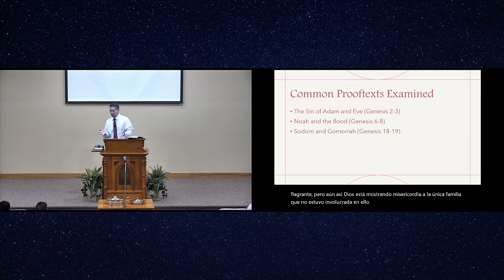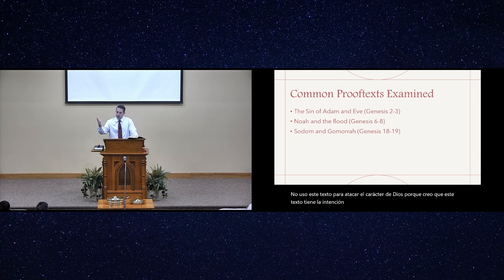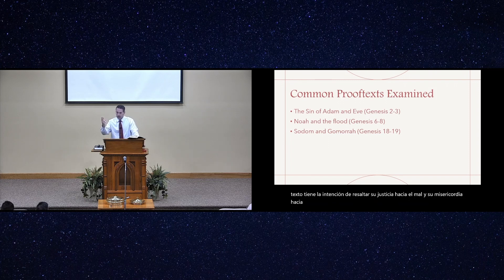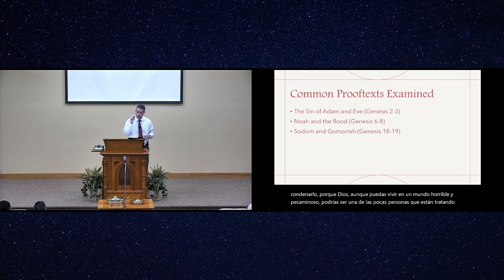Genesis 19:29 says that God remembered Abraham. Sodom and Gomorrah is an example of God answering Abraham's prayer and his request on behalf of the righteous. This city is called exceedingly wicked in Genesis 18:20, where there were even homosexual rapists who sought to attack city guests. This is the ancient example of homosexual sex trafficking. A just and righteous God can't tolerate that, but still God is showing mercy to the one family who was not involved. This text is intended to highlight his justice toward evil and his mercy towards the righteous.